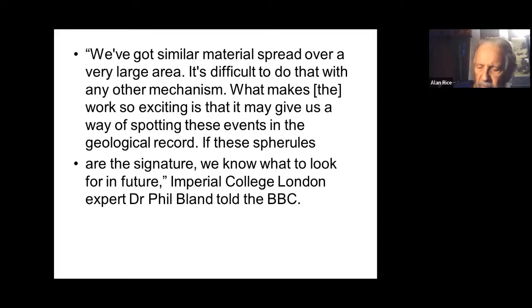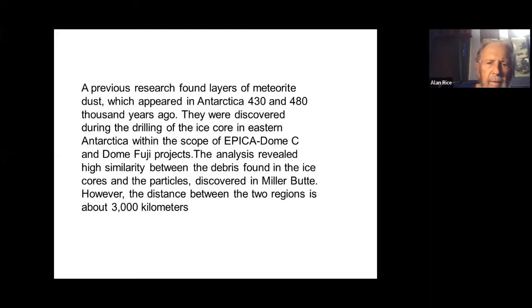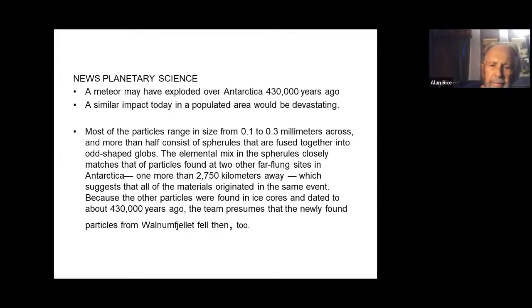The Imperial College people are saying we've got something very much like Tunguska, and they're trying to figure out what caused it. Also discovered during drilling of ice cores in ancient Antarctica within the scope of the Dome C and Dome Fuji projects, we've revealed high similarity between the pre-founded ice cores and particles. The distance between these two reaches about 300,000 kilometers. Even more people are finding more material suggesting something happened about 430,000 years ago.